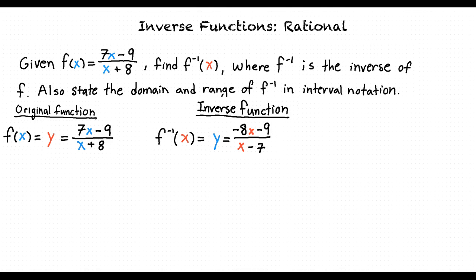How would we go about finding the domain and range of this inverse function? Good question. We know that the domain of this inverse function could not include the x value of 7 because that would make the denominator equal to 0. But all other x values are accepted. This being so, the domain of this inverse function will be negative infinity to 7 in union with 7 to infinity.